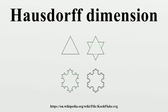But topological dimension is a very crude measure of the local size of a space. A curve that is almost space-filling can still have topological dimension 1, even if it fills up most of the area of a region. A fractal has an integer topological dimension, but in terms of the amount of space it takes up, it behaves like a higher-dimensional space.